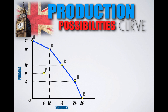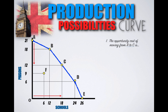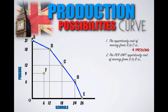Let's do another example. The production possibilities curve provided shows the various production possibility combinations of prisons and schools that Great Britain can produce given its current resources. Moving from Point A to Point C, Great Britain reduces prison output from 21 to 12 prisons to increase school production from zero to 18 schools. The opportunity cost of moving from A to C is nine prisons. The per unit opportunity cost of moving from Point D to Point B — 12 fewer schools but 12 more prisons — is one school per prison.